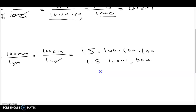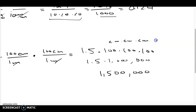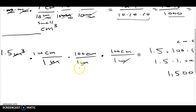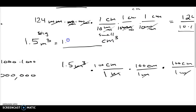1.5 times 1,000,000 gives 1,500,000 centimeters cubed — cm times cm times cm equals cm cubed. So 1.5 m³ equals 1,500,000 cm³.